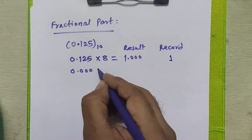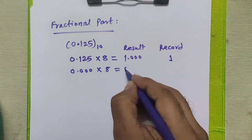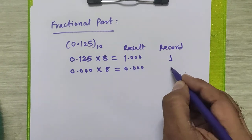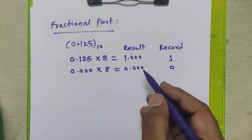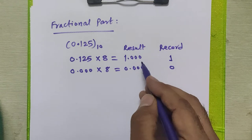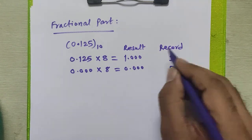So the next calculation is 0.000 times 8. We get 0. We will record this 0. We will continue this procedure until your fractional part becomes 0. But in our first step itself we got our fractional part as 0, which means this is our answer for this fractional part.